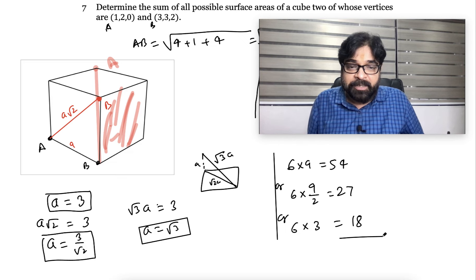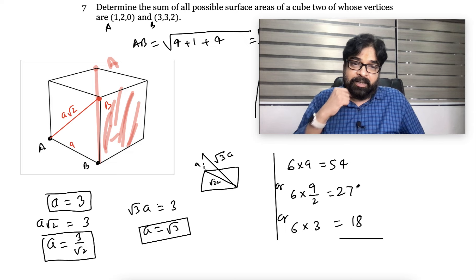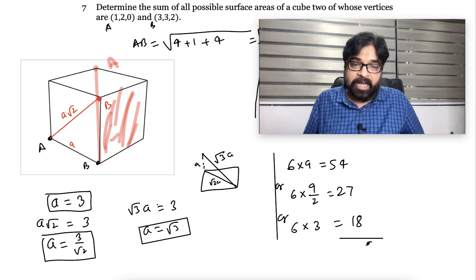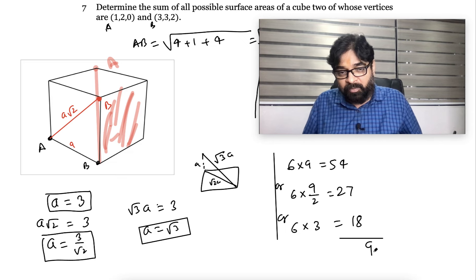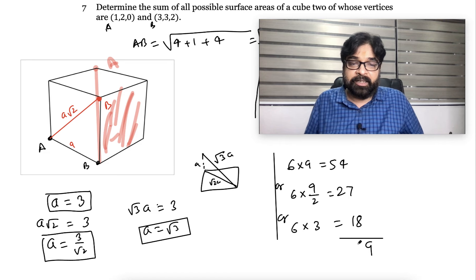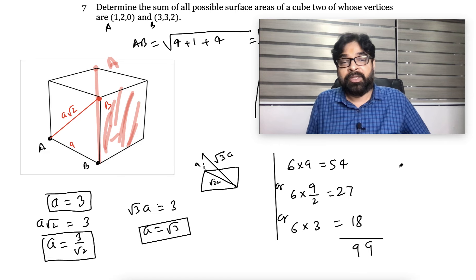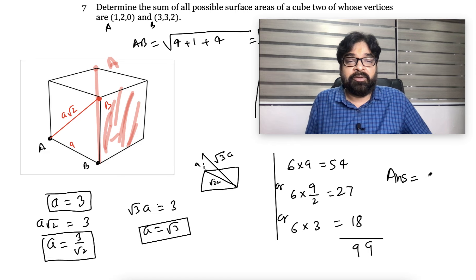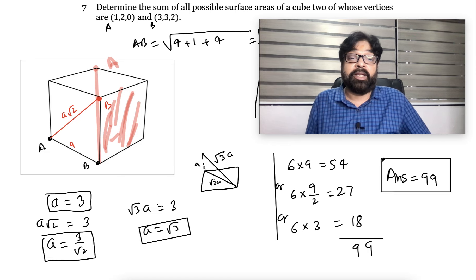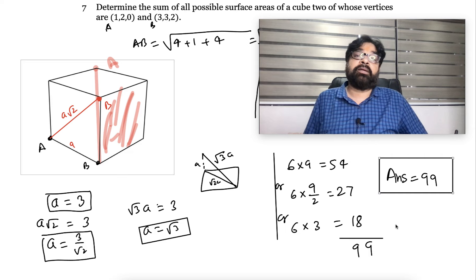So the sum of all possible surface areas will be 54 plus 27 plus 18. That is 54 + 27 = 81, plus 18 = 99. So the answer to this question is 99, assuming I did not make any calculation mistake.